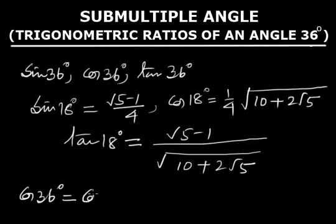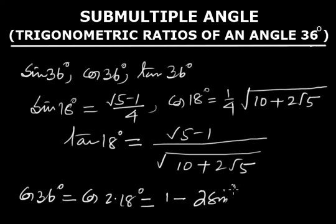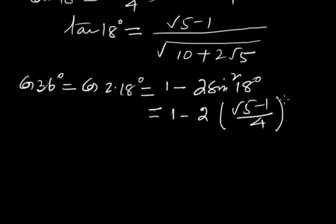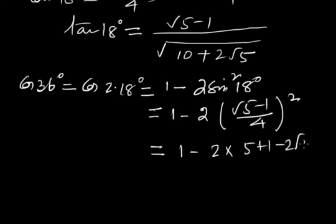cos 36° = cos(2 × 18°). Using the double angle formula, cos 2θ = 1 − 2sin²θ, so this equals 1 − 2sin²18°. Substituting sin 18° = (√5 − 1)/4, we get 1 − 2 × [(√5 − 1)/4]² = 1 − 2 × (5 + 1 − 2√5)/16.